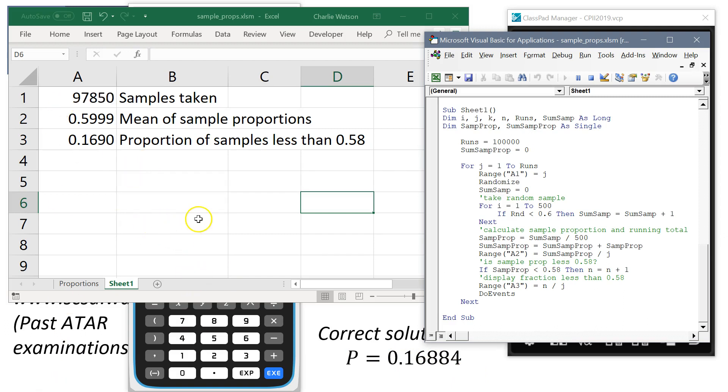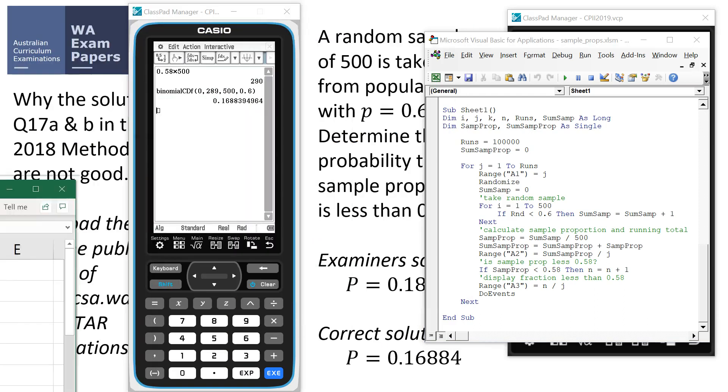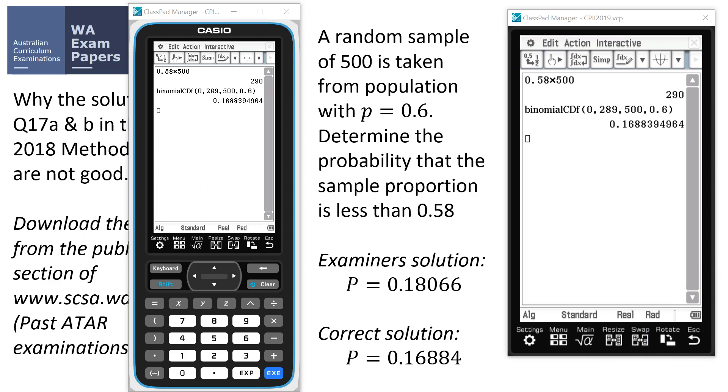So here we go. The moment of truth. We're kind of getting very close to 100,000 samples. And you can see, there it is, 0.169. So we've simulated it. The probability of getting this is about 0.169. Way away from the examiner's solution. Let's just move this stuff out of the way a second. Of 0.1806. And of course, we could have got the right answer using binomial.